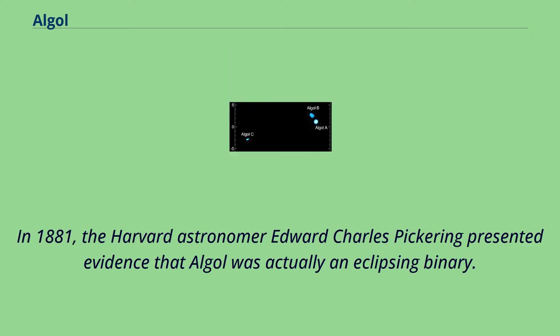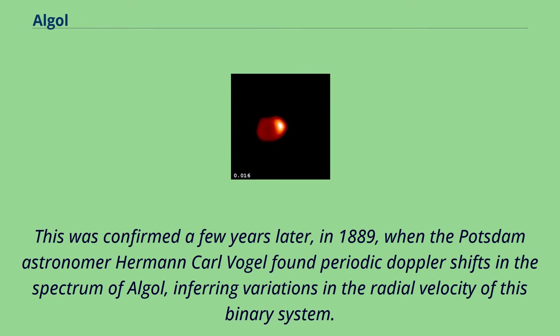In 1881, the Harvard astronomer Edward Charles Pickering presented evidence that Algol was actually an eclipsing binary. This was confirmed a few years later, in 1889, when the Potsdam astronomer Hermann Carl Vogel found periodic Doppler shifts in the spectrum of Algol, inferring variations in the radial velocity of this binary system.